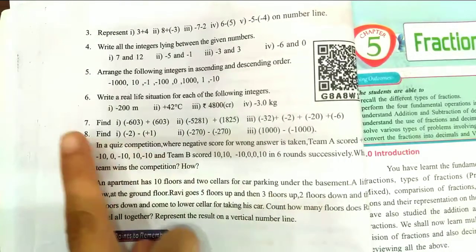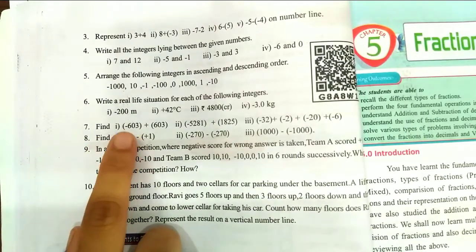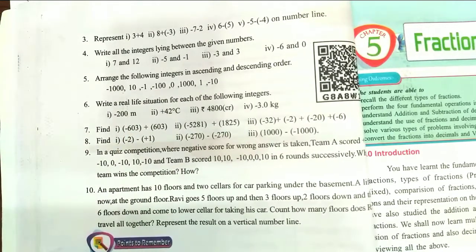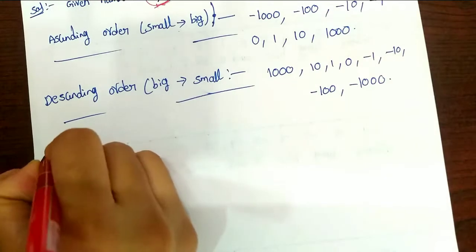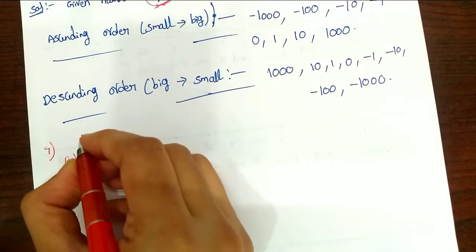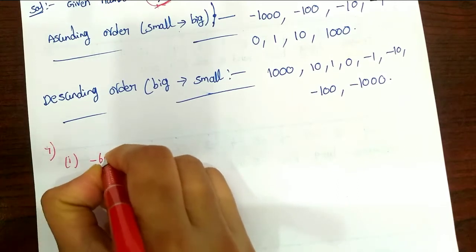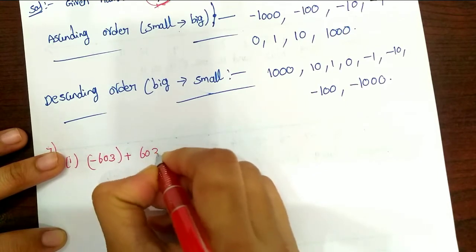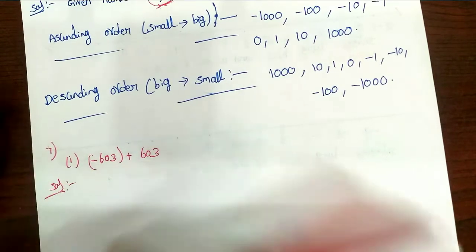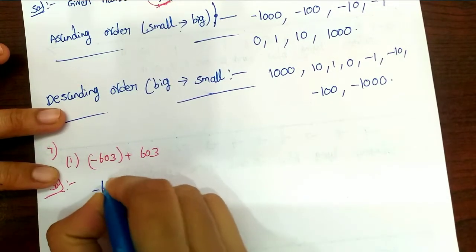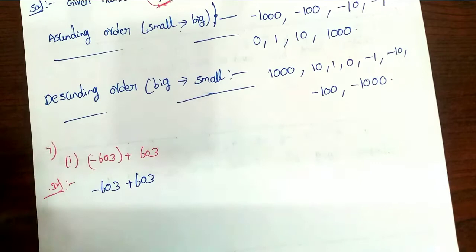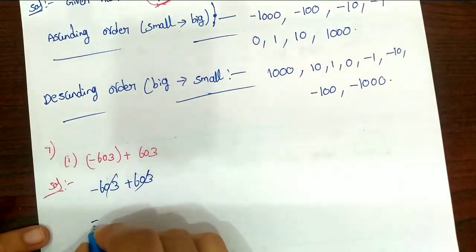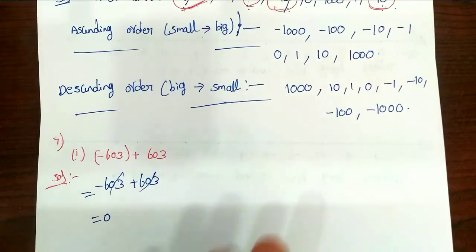Now I have the 7th problem. First one: find minus 603 plus 603. The solution: minus 603 plus 603. Here we have a plus and a minus with the same number, so they cancel each other. The answer is 0.